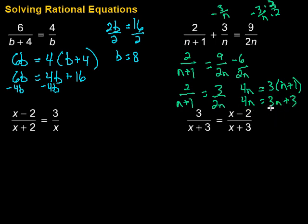Then, I got to get the variables all together. So I'm going to subtract 3n from both sides. So minus 3n, minus 3n. So on this side, I'm left with just n equals 3.